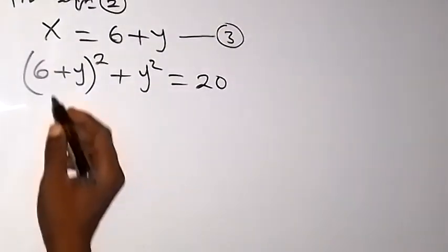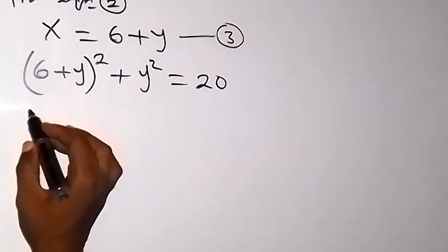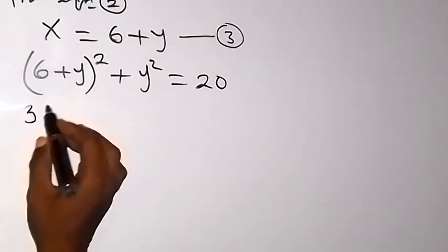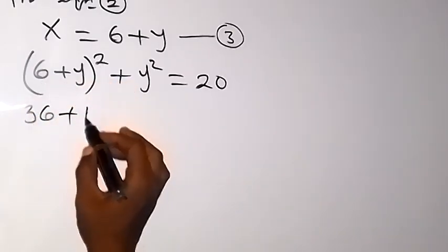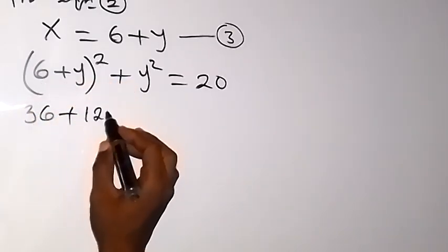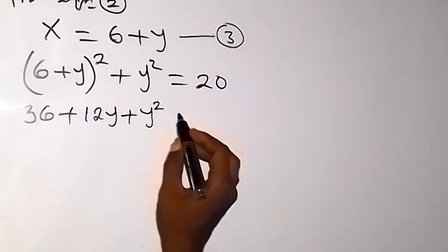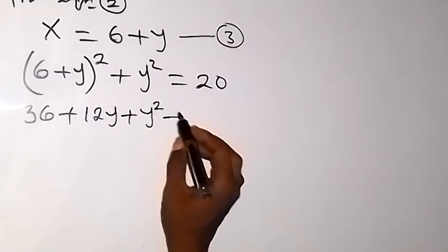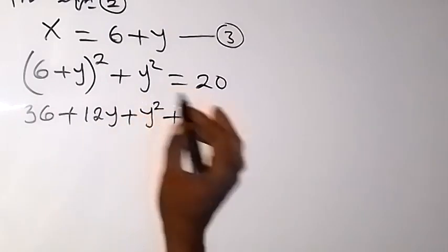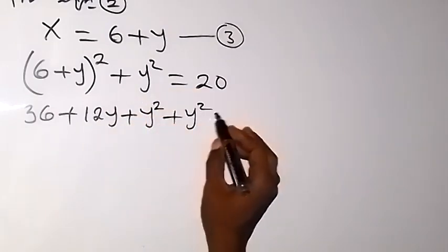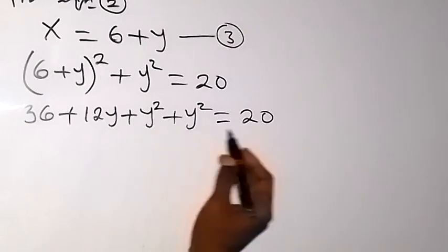We can solve by expanding this bracket. Expansion gives us 36 plus 2 times 6 times y, that's plus 12y, then plus y squared. Then plus y squared again, equals 20.